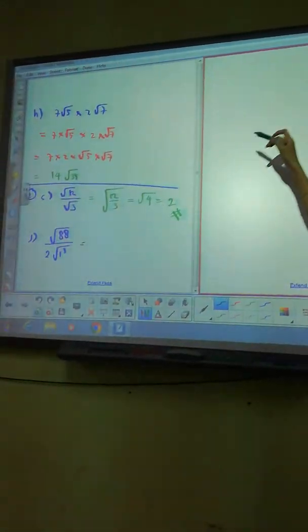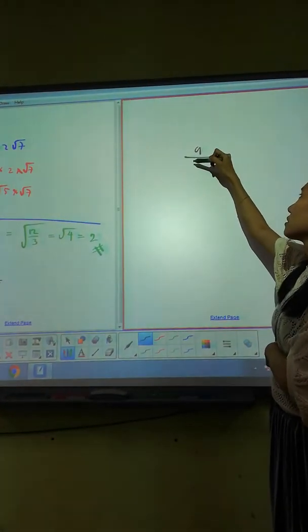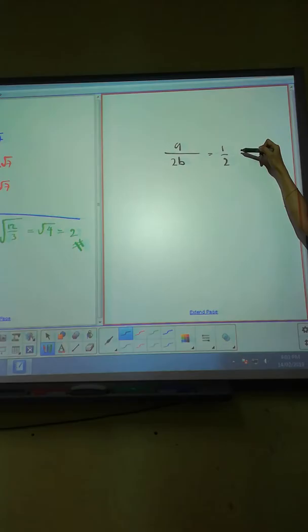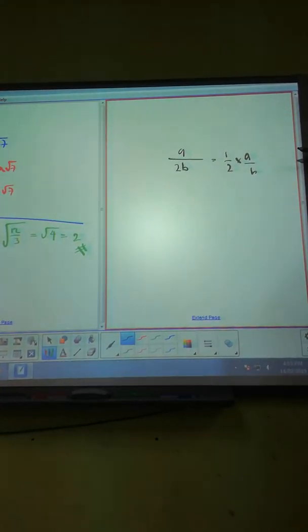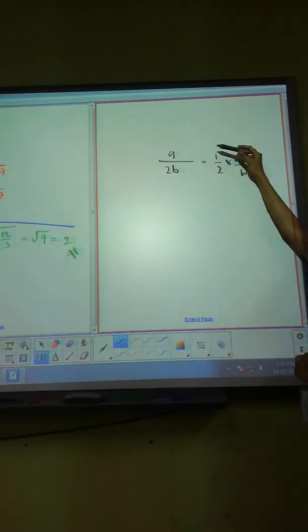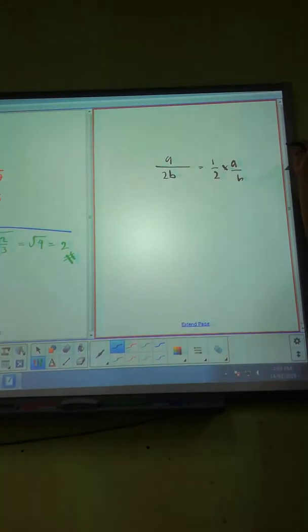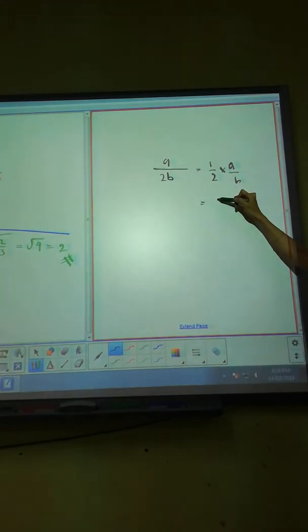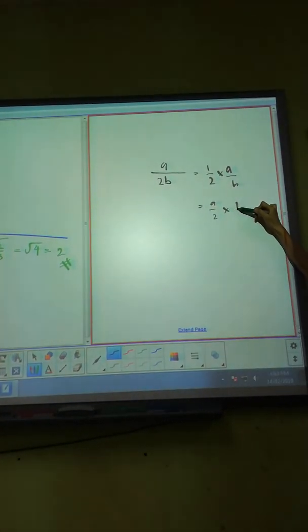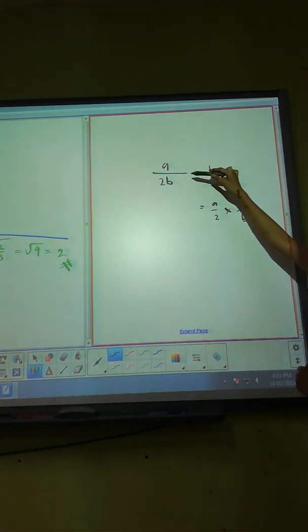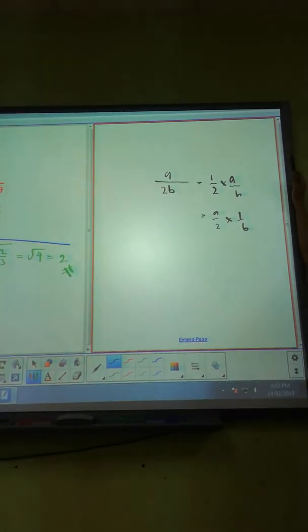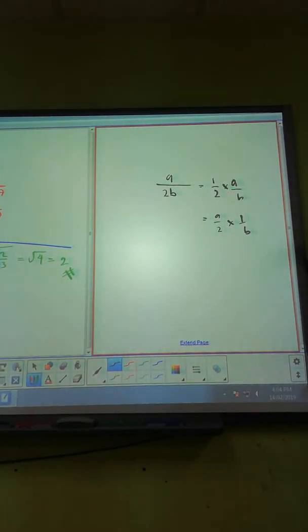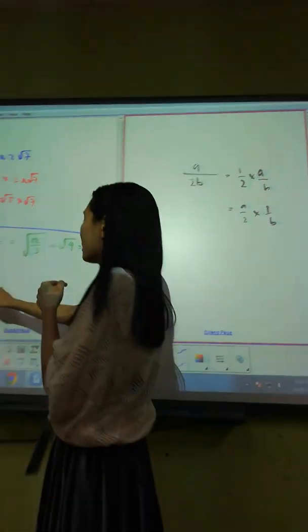Okay, can I ask you this? Can I write them as 1/2 times a over b? Can or not? 1 times a is a, right? 2 times b is 2b, right? Yeah, I can write like that. Or I can even write as a over 2 times 1 over b, also can. So we just need to manipulate to our advantage. You know what I mean? So this one I can...